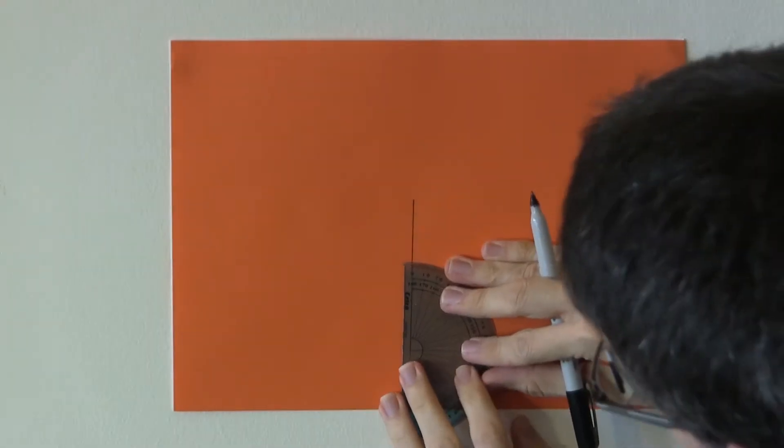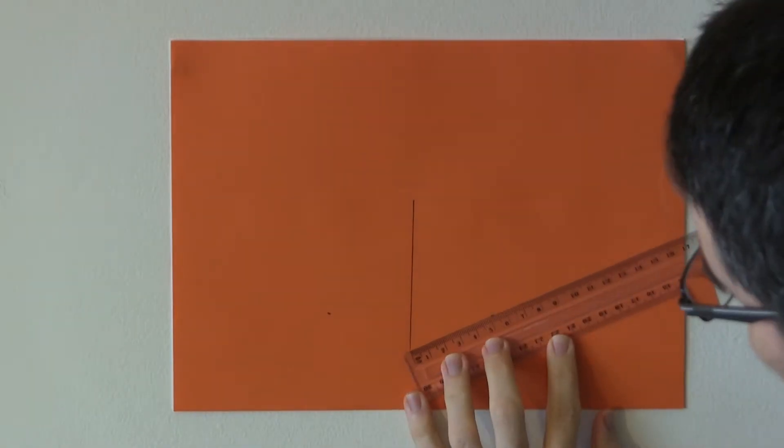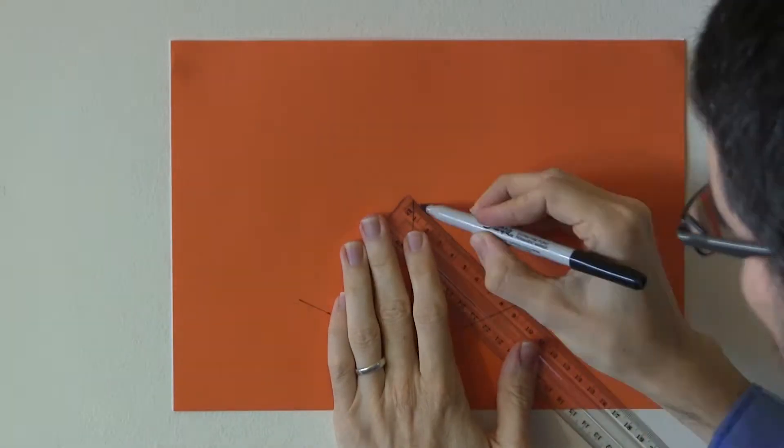Then the pyramid. This is where I need the length of that slanted edge, and the angle at the base.